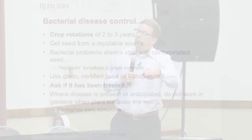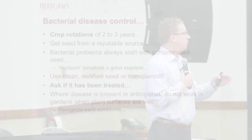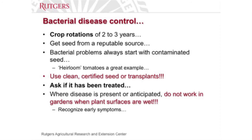Use clean seed — ask if it's been treated and buy clean transplants. If transplants are on the 50% off rack and they've got large brown spots all over the leaves, you probably don't want to bring them home. Buy the healthiest looking stuff. When disease is present or anticipated, try not to work in your gardens when plant surfaces are wet. The best time to water your garden is in the morning, so everything is dry by the afternoon. If you water at 6 p.m. and forget to turn it off, those leaves will be wet for 16 hours — ideal for disease development.